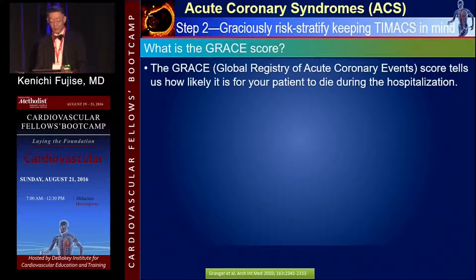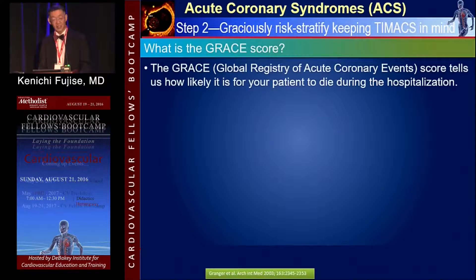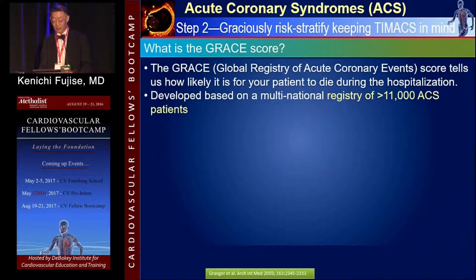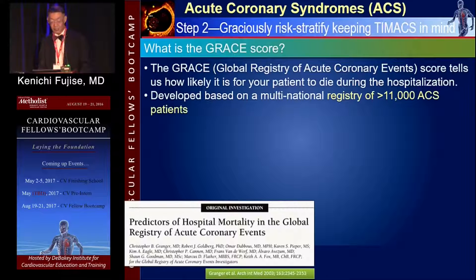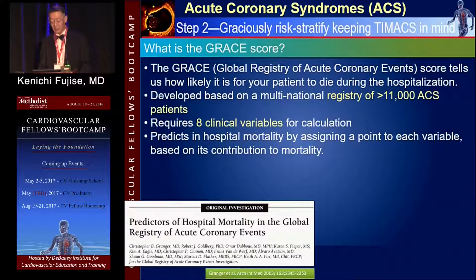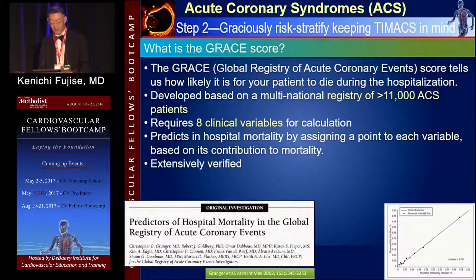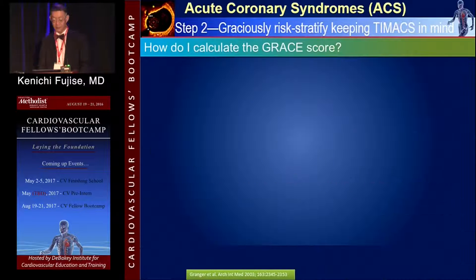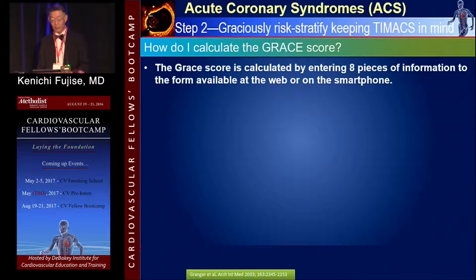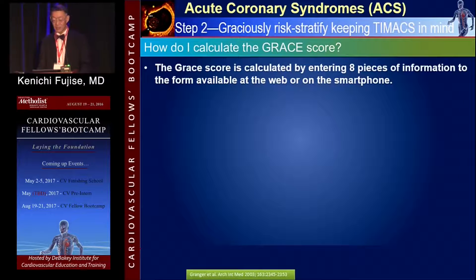What is the GRACE score? The GRACE score tells us how likely your patient is to die during hospitalization. It was developed based on a multinational registry of 11,000-plus ACS patients. It requires clinical variables to calculate and predict in-hospital mortality by assigning a point to each variable based on its contribution to mortality. It has been extensively verified, and the cutoff is 141. The GRACE score is calculated by entering eight pieces of information into a form available at a website or smartphone application.